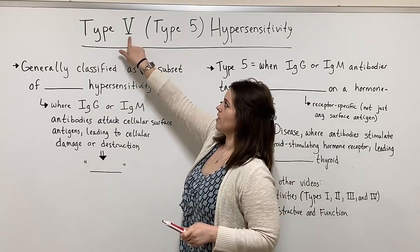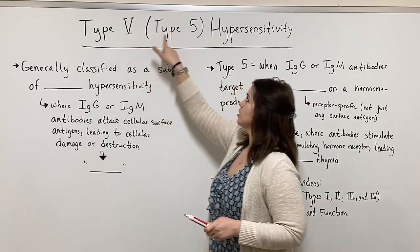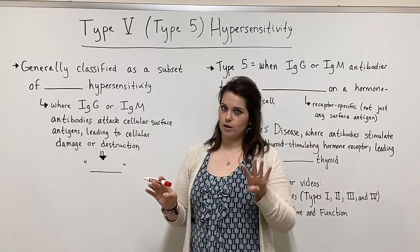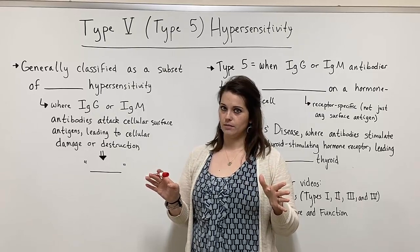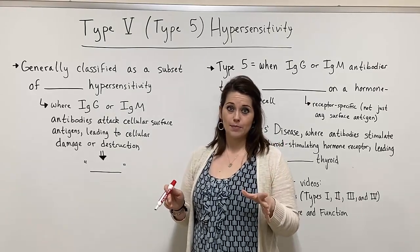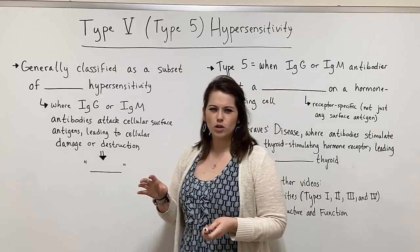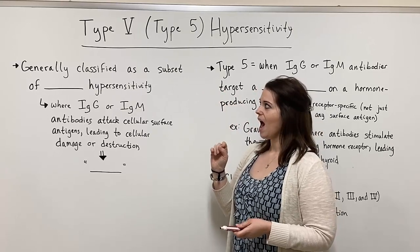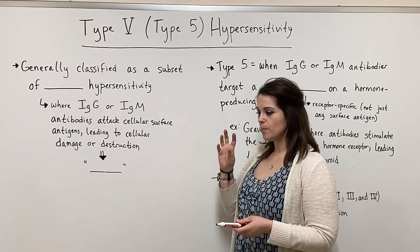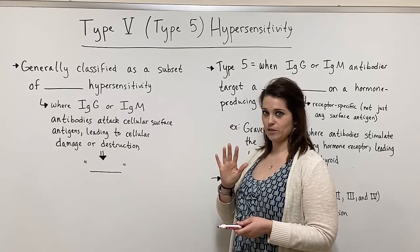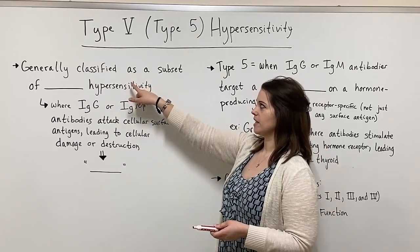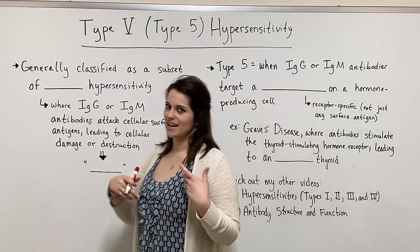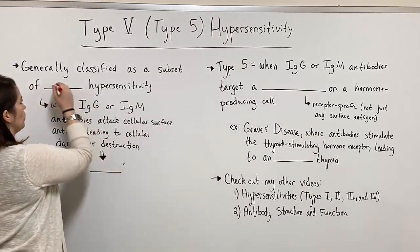So type 5 — remember that V right there is the Roman numeral 5. So type 5 hypersensitivity. And you might already be thinking, hey, whoa, stop, what? Because there's only four types of hypersensitivity, right? Well, most of the time that's what we see. And it's actually a little difficult to find information on type 5 hypersensitivities, because what some people classify as a type 5 hypersensitivity is actually generally classified in most resources as just a subset of type 2 hypersensitivity.